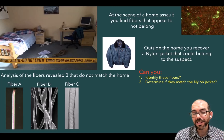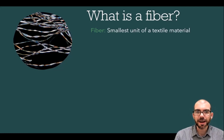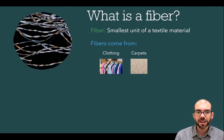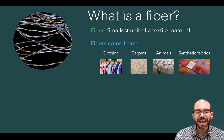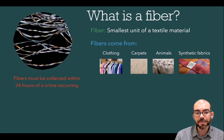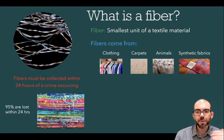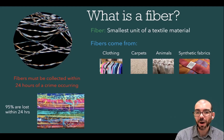Hopefully by the end of this lesson you'll be able to do just that. So what is a fiber? A fiber is the smallest unit of a textile material and can come from a variety of sources — clothing, carpets, animals, and synthetic fibers. If you encounter a fiber, it is paramount that it is collected within 24 hours of the crime occurring. About 95% of fibers are lost within 24 hours.